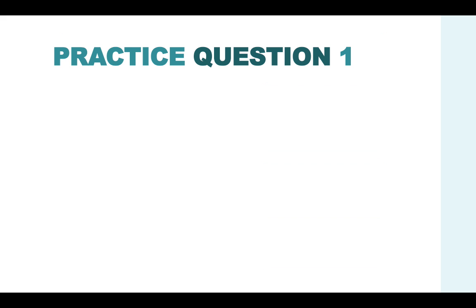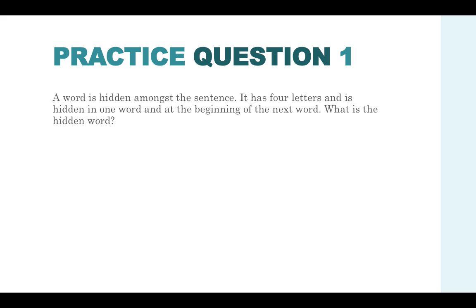Here is practice question one. A word is hidden amongst the sentence. It has four letters and is hidden in one word and at the beginning of the next word. What is the hidden word? This is asking you to understand how to join two words together in order to make another word and it's hidden. So it's all about your visual and attention to detail.